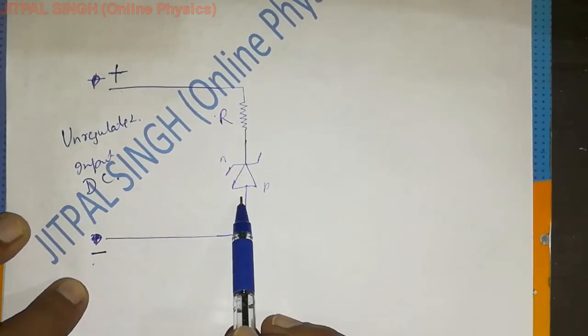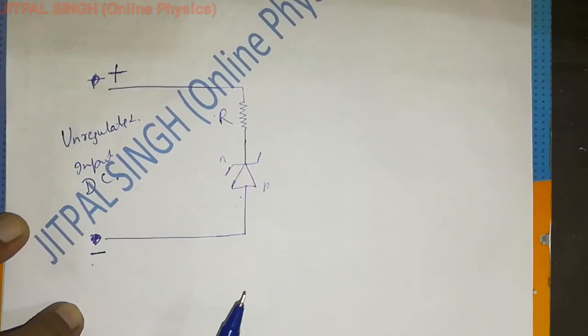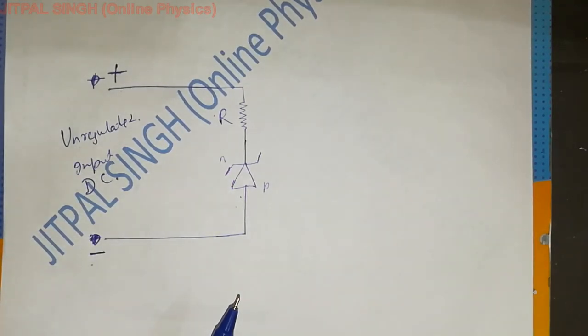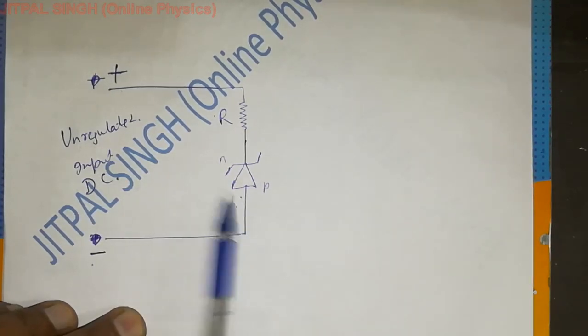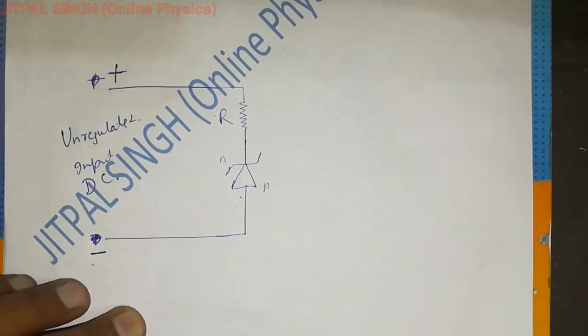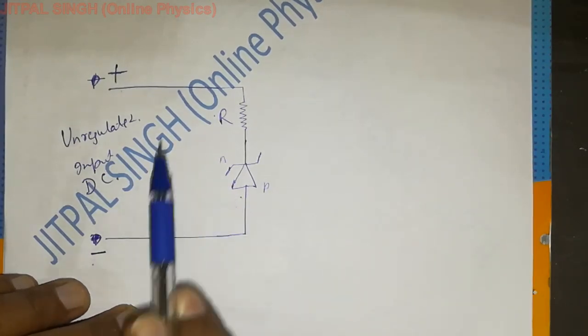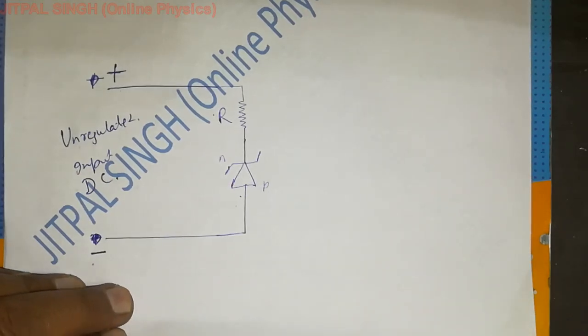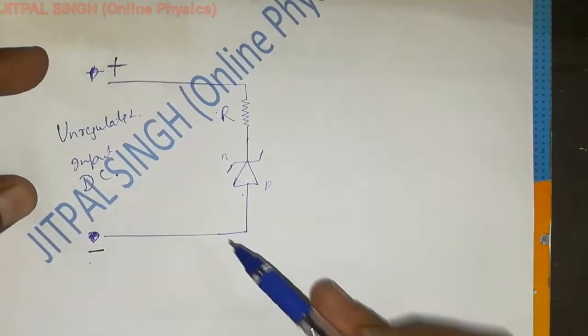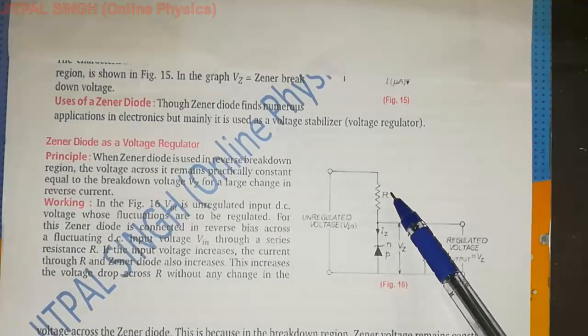Now, let me change this PN junction diode. This is Zener voltage is 40. It remains inactive. It remains inactive.